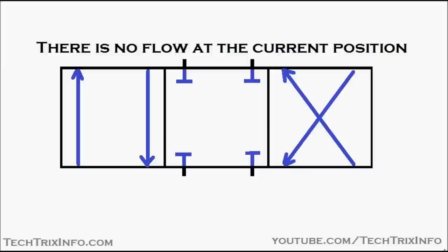At the current center position — position two — there is no flow because all the ports are in a blocked condition. You can see there is no flow happening, and the red color indicates the system is getting pressurized because flow is blocked.